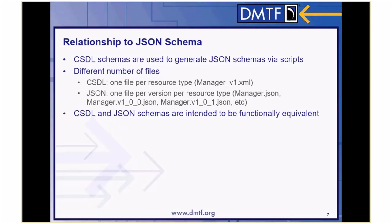Since Redfish supports both CSDL and JSON schema formats, it's important to maintain equivalent functionality in both spaces. The CSDL schema files are used to generate the JSON schema files via scripts. There will be a different number of files associated with each of the file types. CSDL schema files are just one file per resource, such as manager.xml, and JSON schema files will have one file per version per resource type, such as manager.json, manager.v100.json, manager.v101.json, and so on. Both sets of schema files are intended to be functionally equivalent.